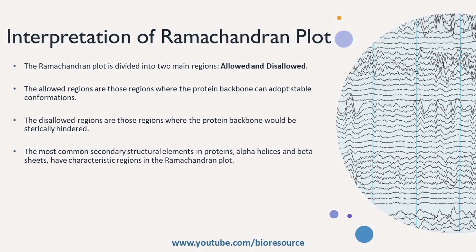Some Ramachandran plots also include regions for glycine and proline, which have unique backbone properties. These regions are distinct from those of the other amino acids.